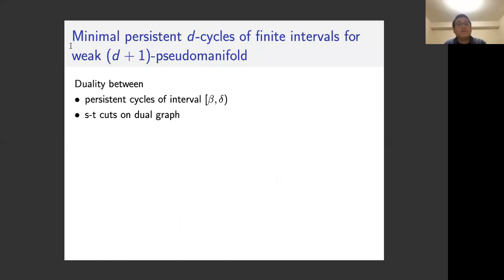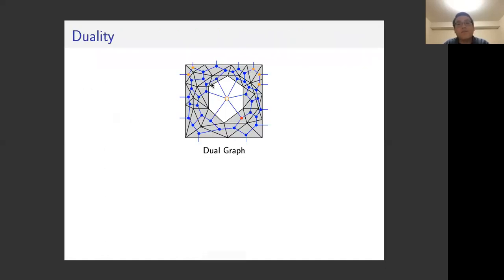Now for the algorithm for computing minimal persistent D-cycles for finite intervals when the given complex is a weak D+1 pseudo-manifold. This algorithm utilizes the duality between persistent cycles of interval beta-delta and S-T cuts on a dual graph. On the dual graph, with D=1 in this example and the underlying complex being a weak two pseudo-manifold, we put a vertex for each D+1 simplex. We also add a dummy vertex which does not correspond to any D+1 simplex.